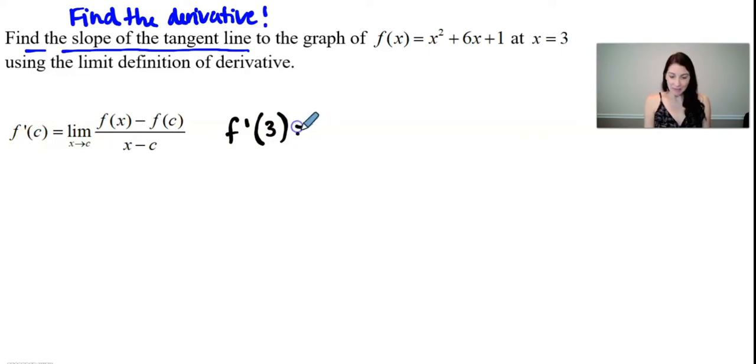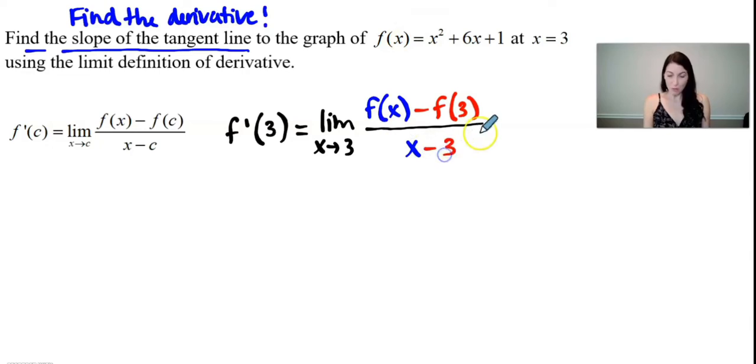And the limit definition of derivative tells us that the limit as x approaches 3 of f(x) - f(c), in our case 3, all divided by x - 3 will give us the derivative of this function at the x value of 3.